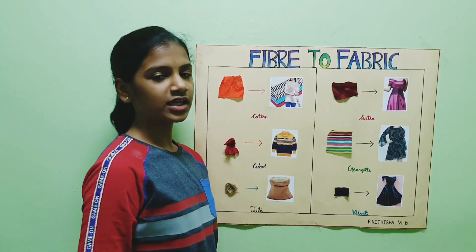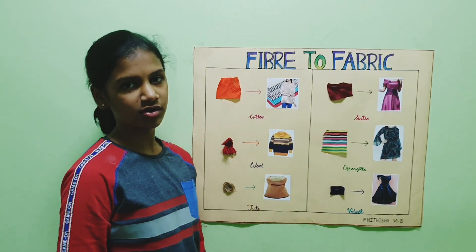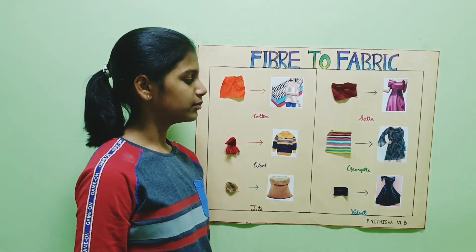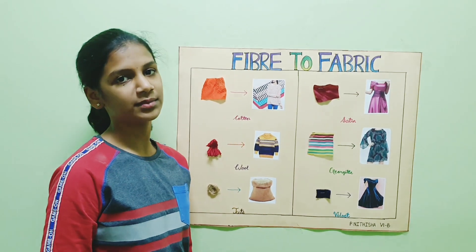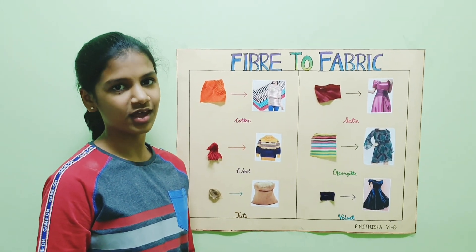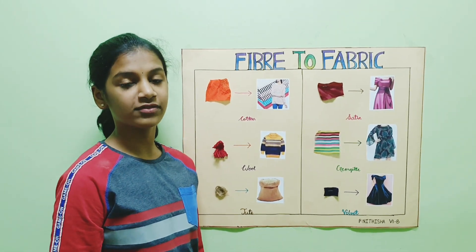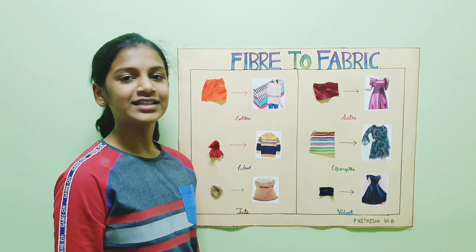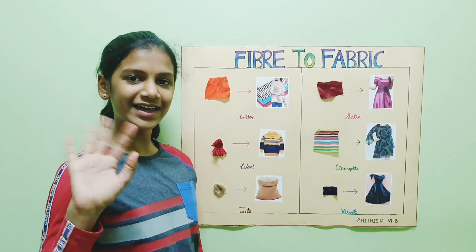Georgette is not purely natural or synthetic. It is made from pure silk, or it can also be made from synthetic fibers. Hope you understood what is fiber and fabric. Thank you for watching. Bye.